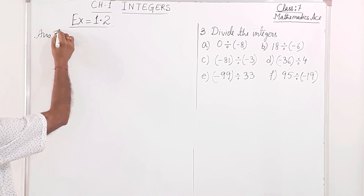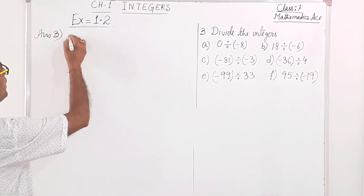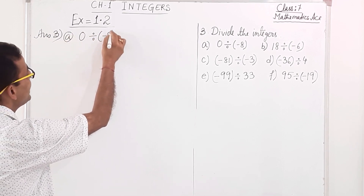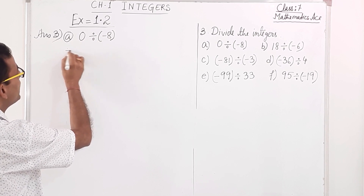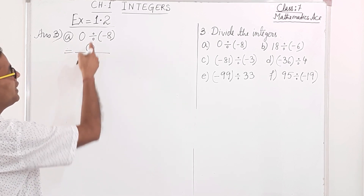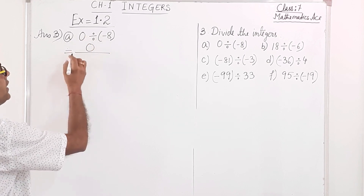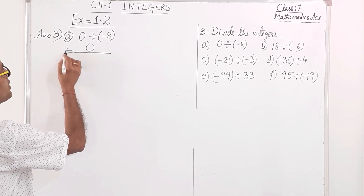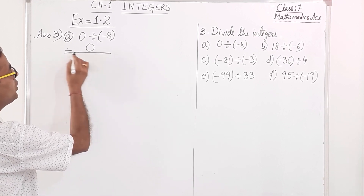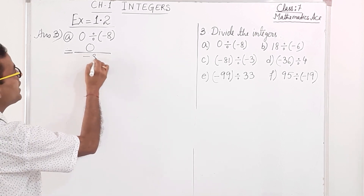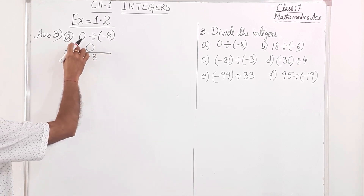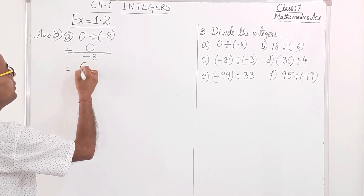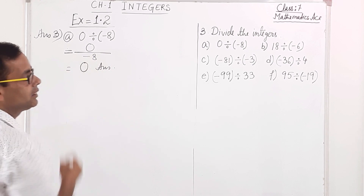Answer 3 — division of integers. Number A: 0 divided by minus 8. We write it as 0 over minus 8. Remember, 0 divided by any number is always 0. So the answer is 0.